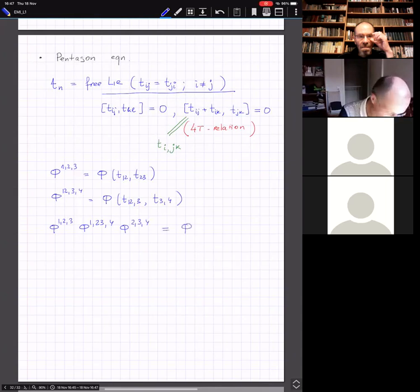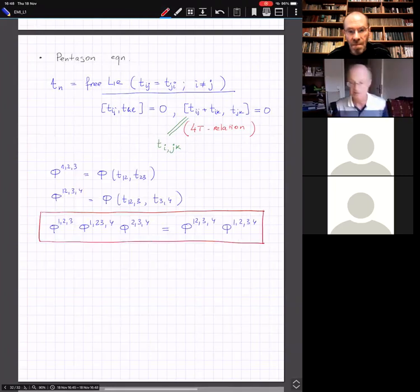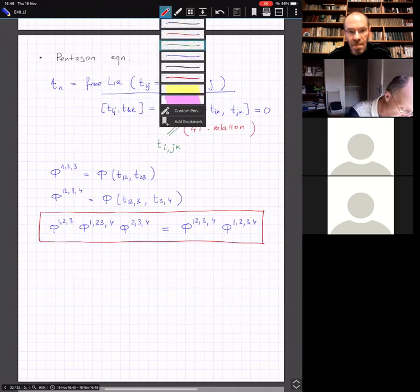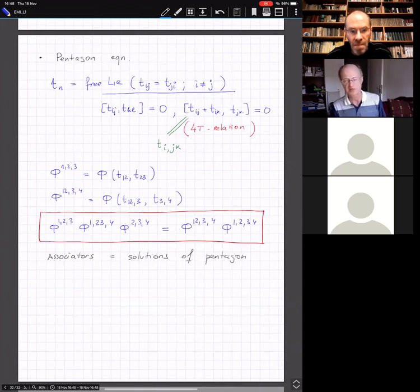Which is a kind of upgrade of the connection that we were looking at all the time. Now all the points, they can move, or maybe i smaller than j. So all the points can move. And the coefficients are those T_ij's. So this connection turns out to be flat. And pentagon is one of the manifestations of its flatness, probably the most interesting manifestation of its flatness. So now let me show you two more things.